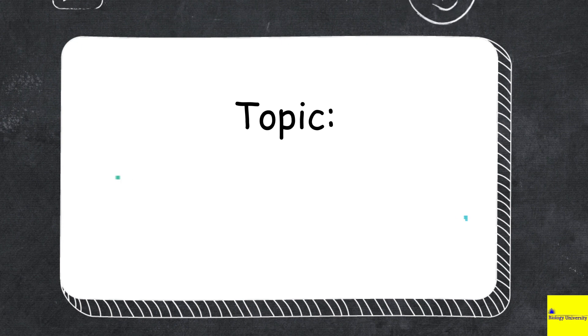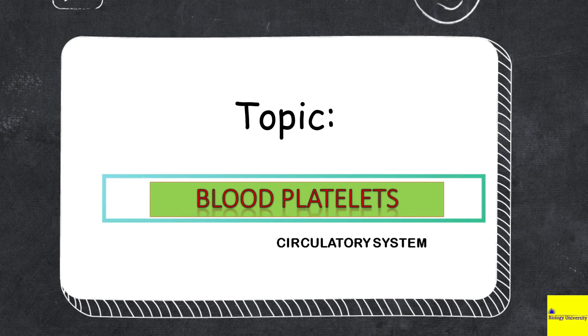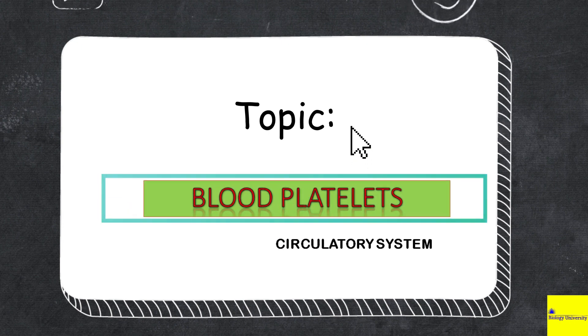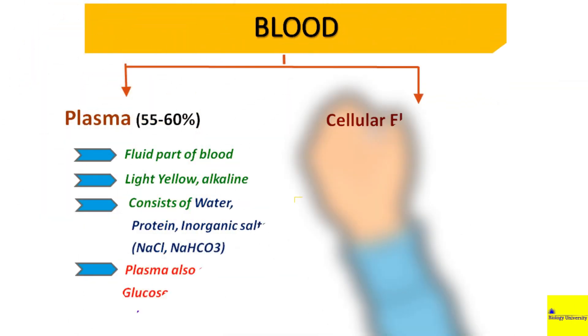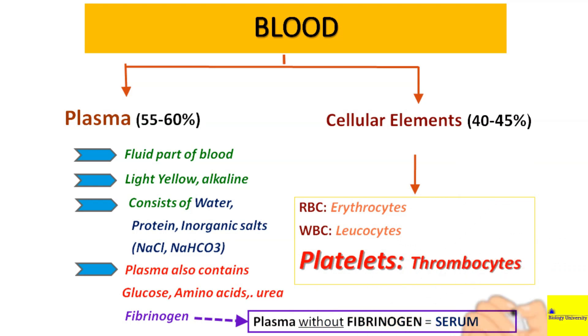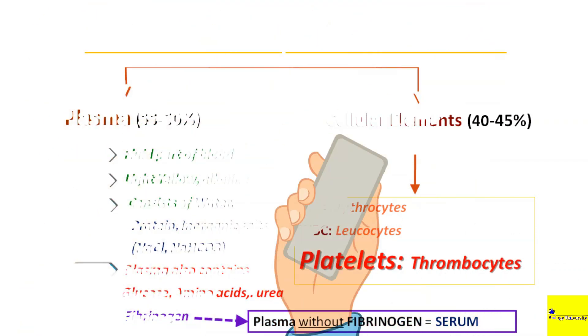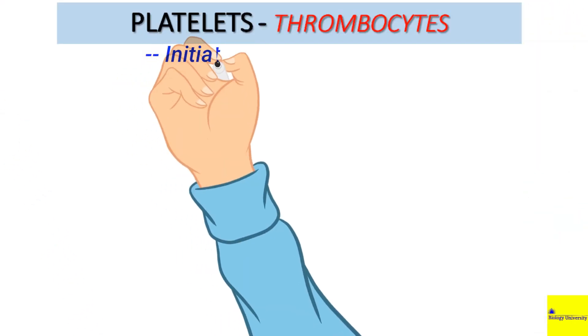Hello everyone. Today's topic is blood platelets of the circulatory system. We have already discussed the components of blood in our earlier slides on RBC and WBC. Today we are going to discuss in detail about platelets or thrombocytes — the initiators of blood clotting.